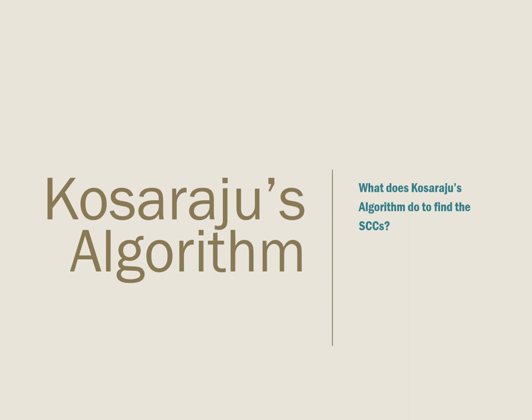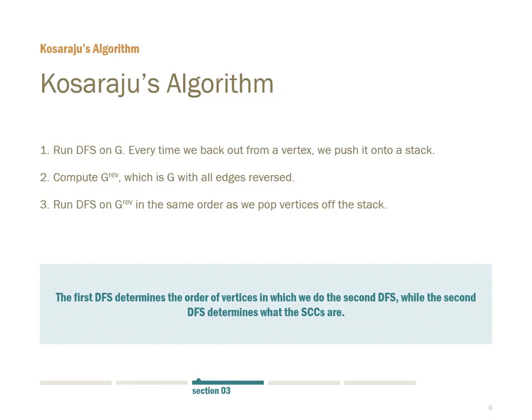Now we will talk about Kosaraju's algorithm, its runtime analysis, and the reasoning behind it. So what does it do? First, it runs a DFS on G and keeps a stack of vertices, so that every time we back out from a vertex, we push it onto the stack. Second, we compute G reverse — this is G with all edges reversed, also called G transpose. Third, we run DFS on G reverse in the order that we pop vertices off the stack. The first DFS determines the order of vertices for the second DFS, and the second DFS will actually determine what the SCCs are.